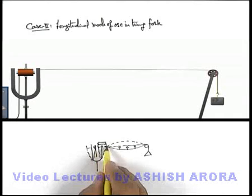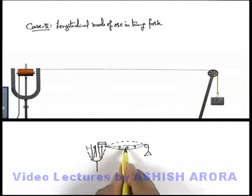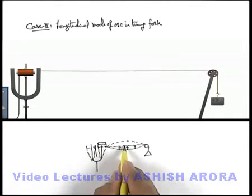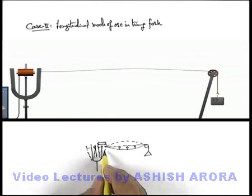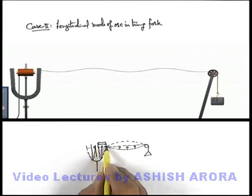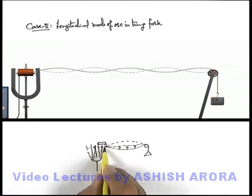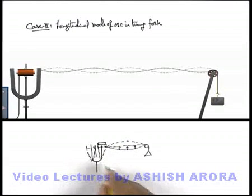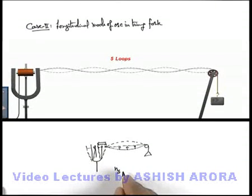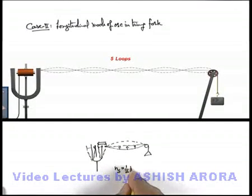As the arm of the tuning fork oscillates in a horizontal manner, or along the longitudinal direction of the string, the string will first get loose, then tight, then loose again. Due to this, the string will oscillate in the perpendicular direction. But during one oscillation of the arm of the tuning fork, the string will oscillate only half an oscillation. So we can say the frequency of oscillation of the string will be equal to half of the frequency of oscillation of the tuning fork.